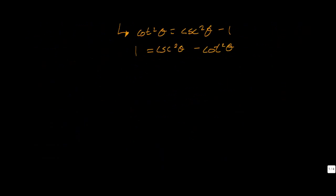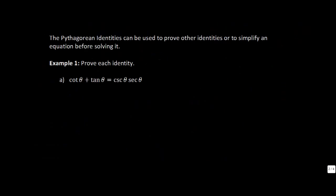Let's try a couple of examples. A quick note: the Pythagorean identities we looked at can be used to prove other identities, which is what we'll do in the first examples. They can also be used to simplify an equation before solving it, which will be the last example.